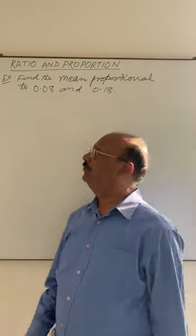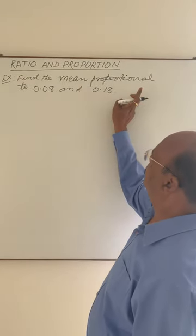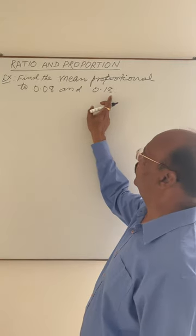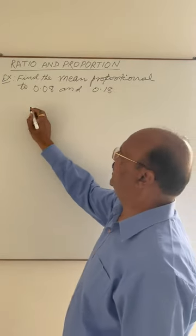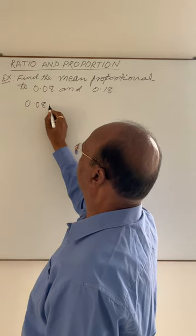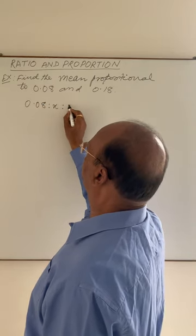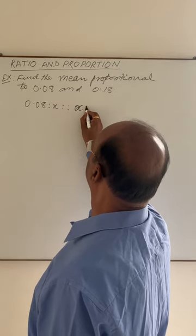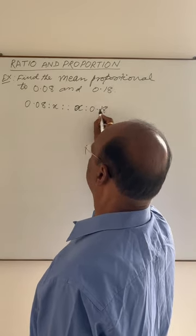Here we have to find out the mean proportional to 0.08 and 0.18. We can write it as 0.08 is to x proportional to x is to 0.18.